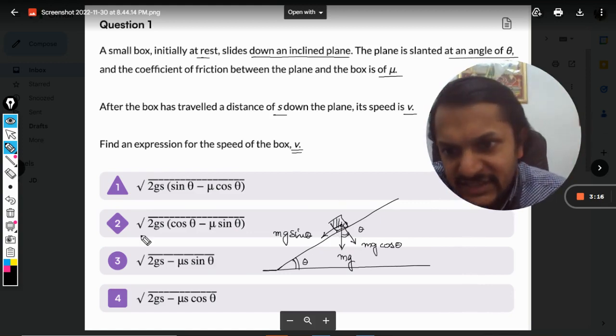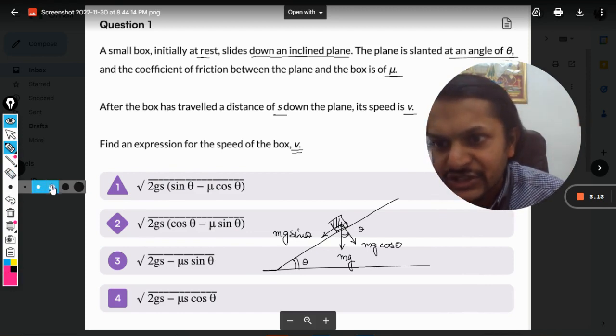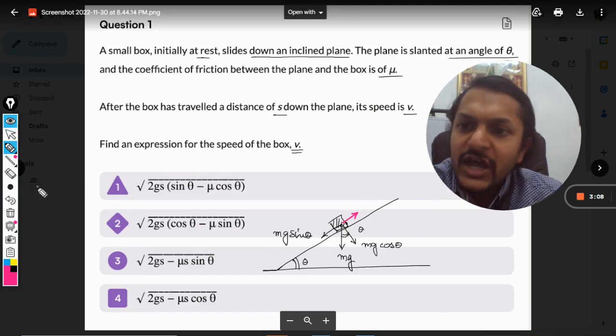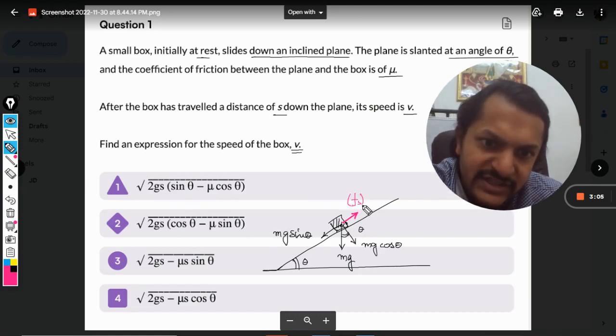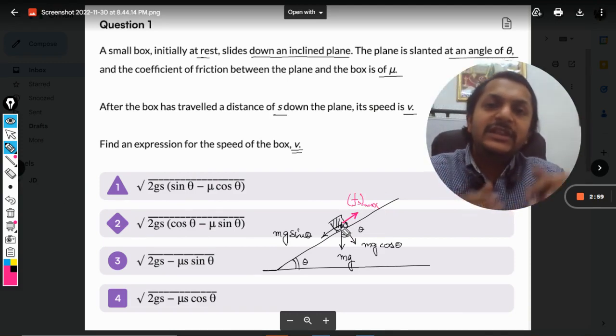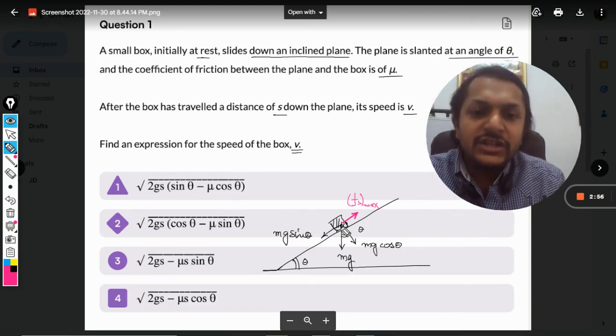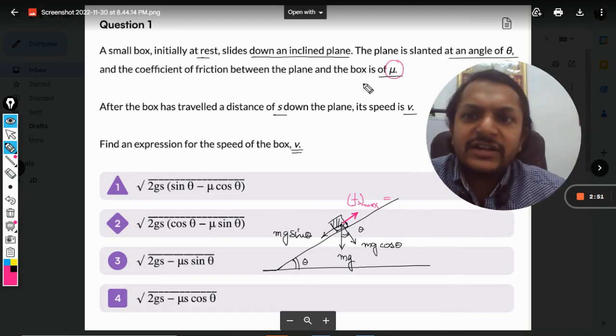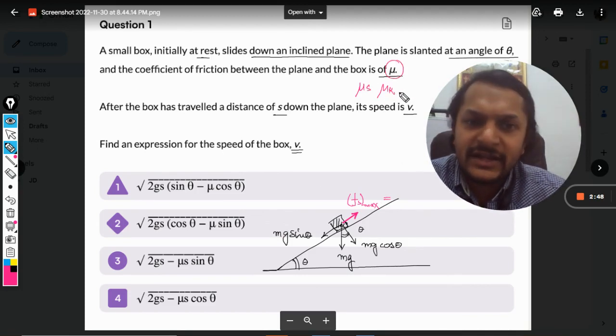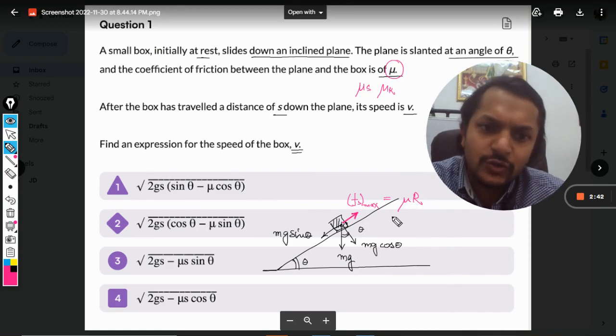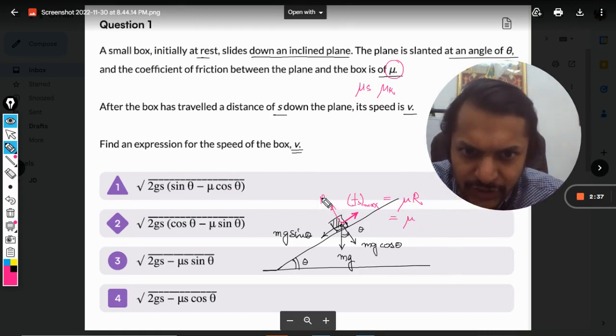Now the friction force is acting backwards. How much will this be? Obviously this will be the maximum force because the body is sliding down, so this friction will be the maximum static friction that is possible. They have not mentioned whether it is a static or kinetic coefficient of friction, so you can take it as mu times R. So it will be mu, and what is the reaction R going to be?